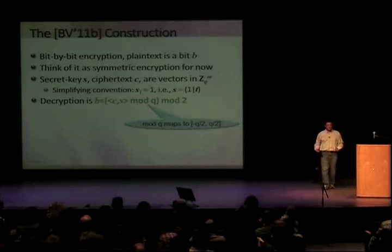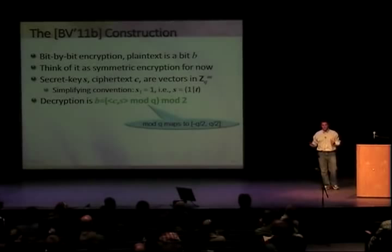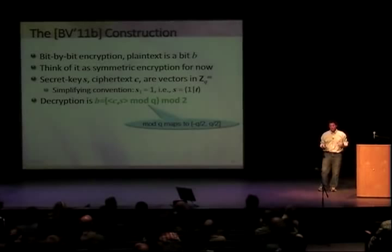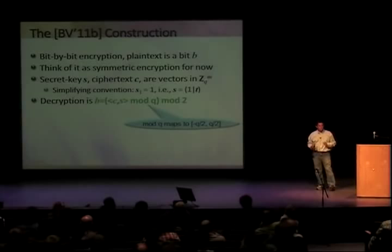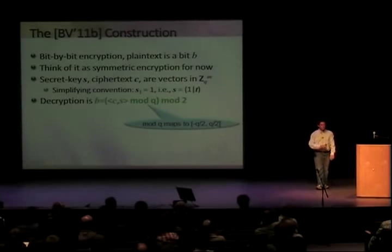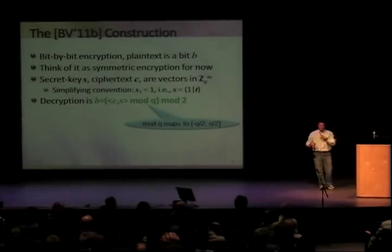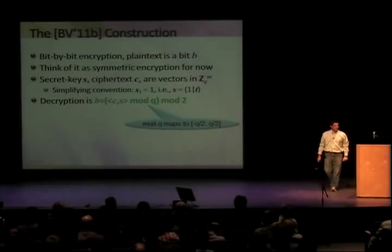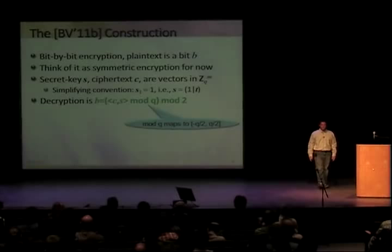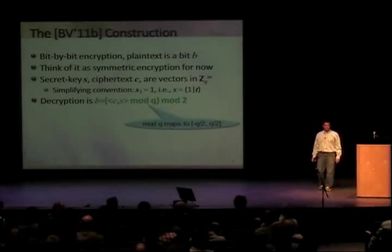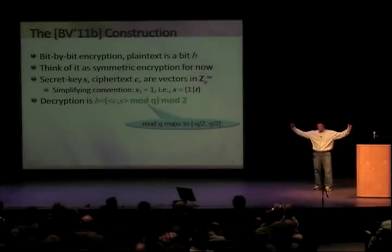Let's start covering the BV construction slowly. There are going to be many steps, and at the end we'll have a homomorphic encryption scheme. We encrypt bit by bit — the plaintext is a bit B. Let's start by thinking about it as a symmetric encryption; the public key will show up later. The secret key is a vector S, the ciphertext is a vector C — these are vectors in Z_Q to the N.